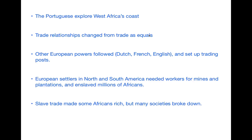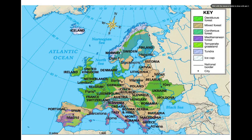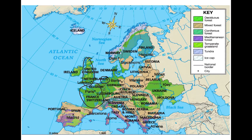And then the other countries such as England, France, and the Dutch — which if you look on our map again, here's the Netherlands, a very small country; England is this island right here; and France is located just to the south of England. So all very close together, and not a lot of them have a lot of land in terms of resources.